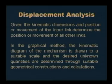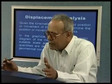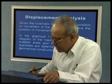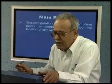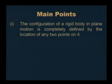We shall demonstrate this graphical method through a series of examples. However, before going into the details, let me list the main points that one should remember while using the graphical method of displacement analysis. First of all, we must remember that the configuration of a rigid body in plane motion is completely defined by the location of any two points on it. That means, if we know the location of any two arbitrary points of a rigid body in plane motion, then we know the location of all other points on that rigid body.